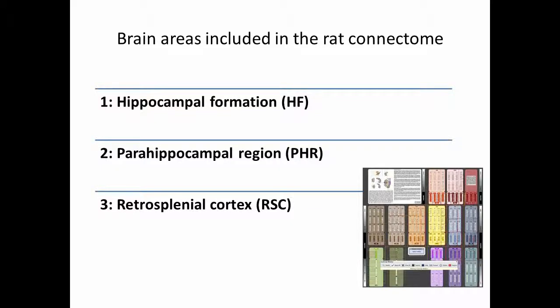In the current version of the connectome, three brain regions are included. Those are the hippocampal formation, the parahippocampal region and the retrosplenial cortex.